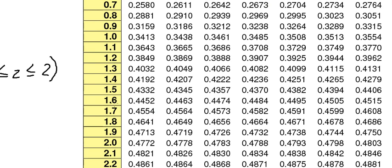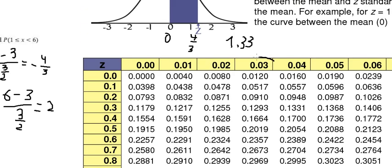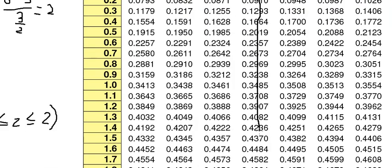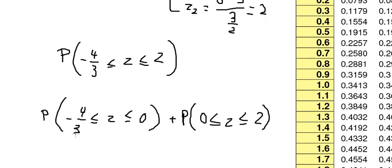We have 1.3 here and 0.03 here. So we put this one here to this number. The probability from 0 to 1.33 approximately is 0.4082. We put this number here.